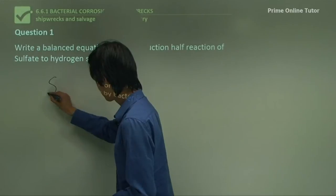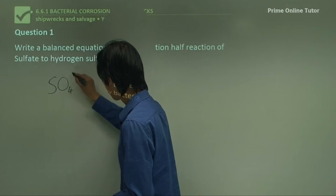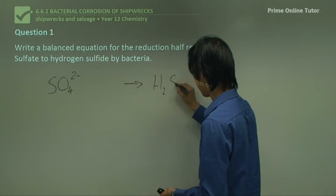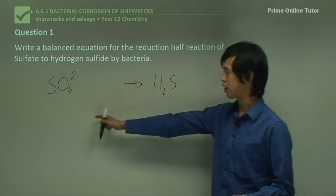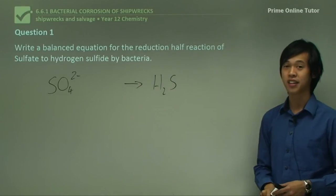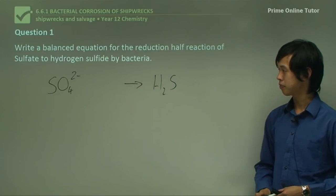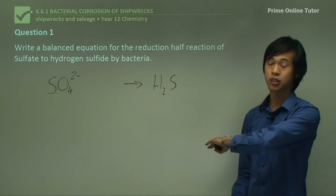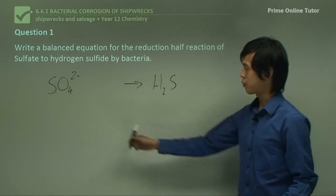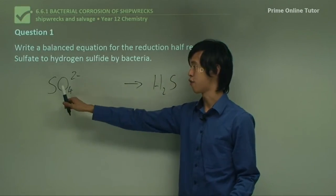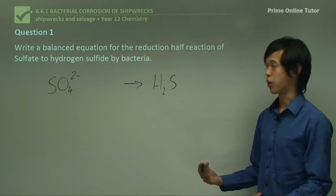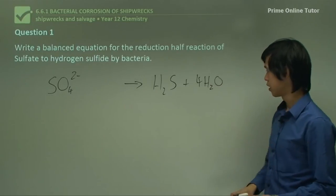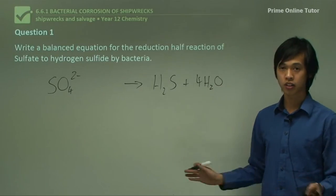Question one: write a balanced equation for the reduction half-reaction of sulfate to hydrogen sulfide by bacteria. Even though we haven't looked at the chemistry of this actual process yet, you can do this question because you've already gained the knowledge from previous topics — just apply the same rules. So to start, we've got sulfate turning into hydrogen sulfide, as given in the question. We just apply the same rules to this redox reaction as we would to any redox reaction. Balance oxygen first — there are four oxygens here — and to balance oxygen, we add water, so we add four waters.